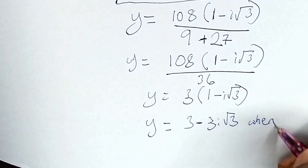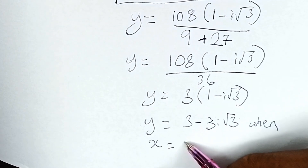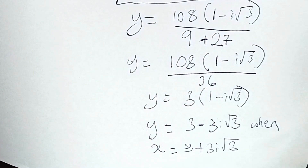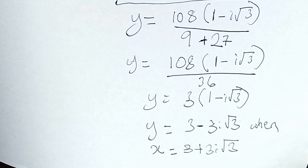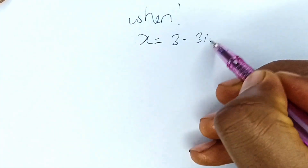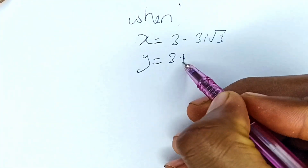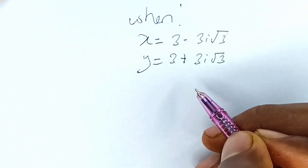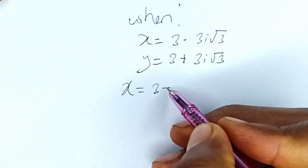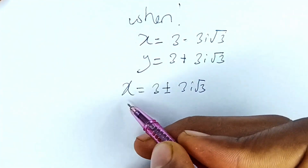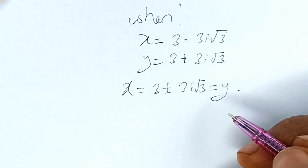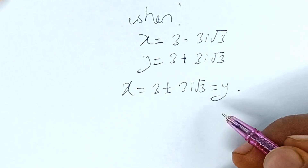If this follows, then by symmetry the other condition also follows: when x is equal to 3 minus 3i root 3, y is equal to 3 plus 3i root 3. Hence, the answers for this question are x is equal to 3 plus or minus 3i root 3, and correspondingly y equals 3 minus or plus 3i root 3. These are the answers to this question. Thanks for watching — if you made it to the end, please like, comment, and subscribe. I'll see you in my next video. Goodbye.